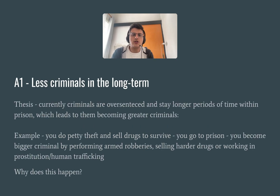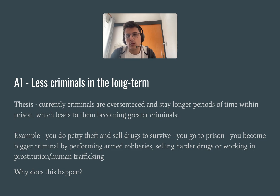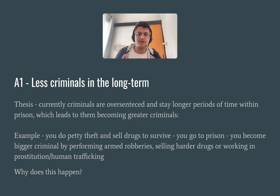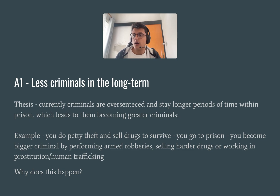The general thesis of the first argument is that currently criminals are over-sentenced and stay longer periods in prison, which leads to them becoming greater criminals. The example is: you do petty theft or sell some drugs to survive, you go to prison, and you become a bigger criminal after — now performing armed robberies, selling hard drugs, or working in human trafficking. You could provide reasons as to why over-sentencing happens in the status quo — for example, how the criminal system is biased toward specific people, or a hard-on-crime narrative that pushes judges to incarcerate people.